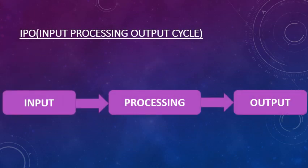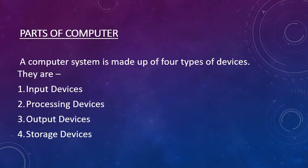Here, children, we can see the IPO cycle. The full form of IPO is Input Processing Output cycle. We take input from the user, then the computer processes it and gives output to some output device.